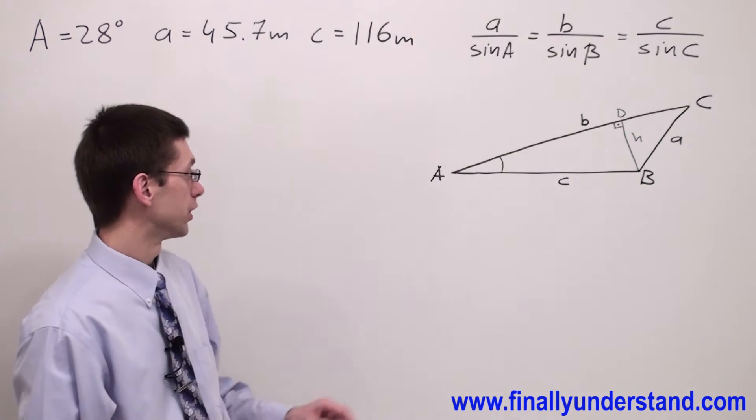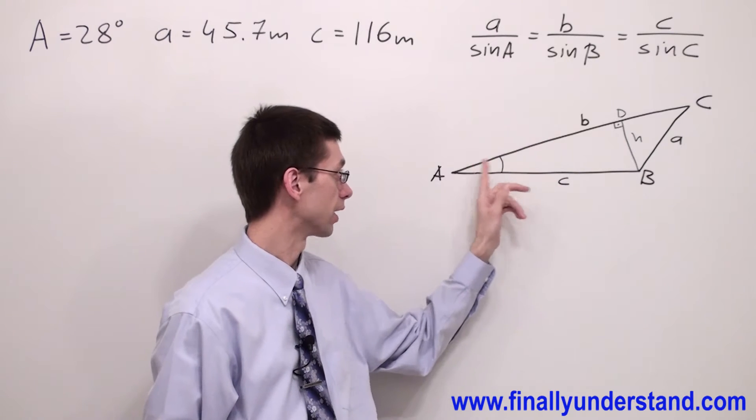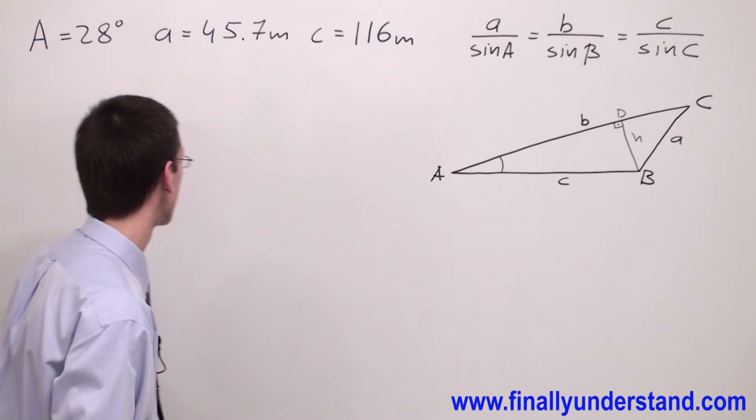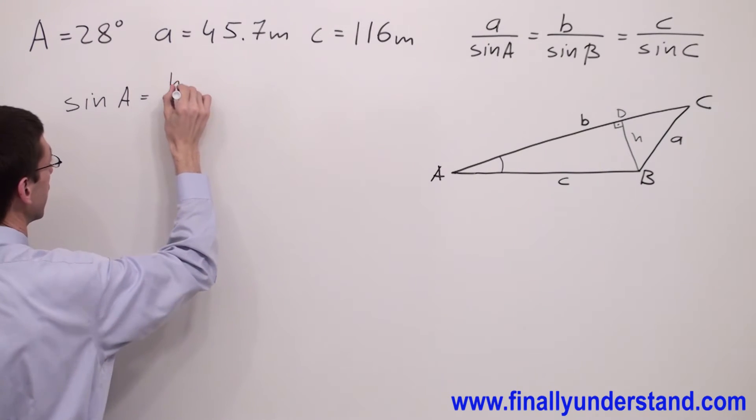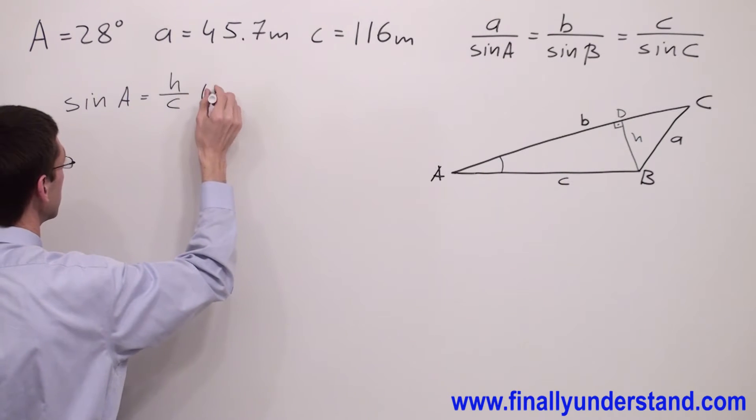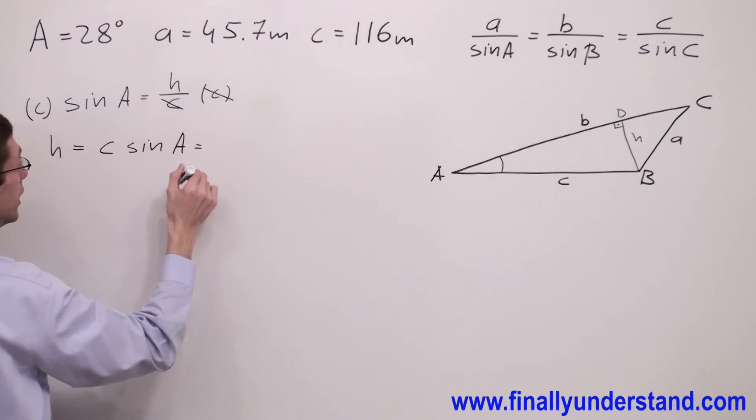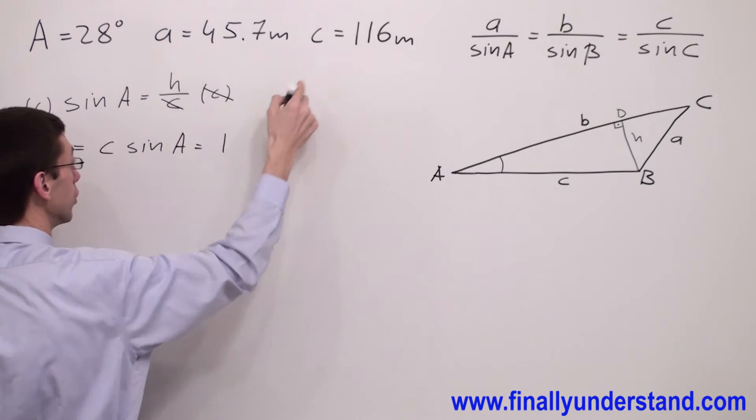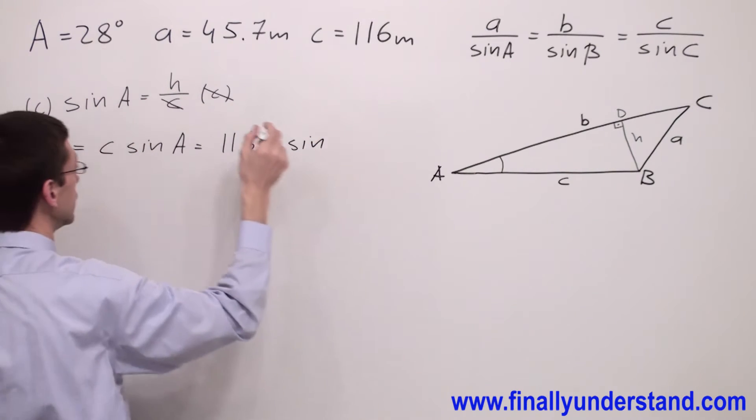Now please notice that we have given side C and we have given angle A, so we can use sine of angle A to find the length of H. So I have sine of angle A equals H over C. In order to find H, I have to multiply both sides of my formula by the denominator, by C. C and C will cancel out, and I have H equals C times sine of angle A, where C equals 116 meters times sine of angle A which equals 28 degrees.